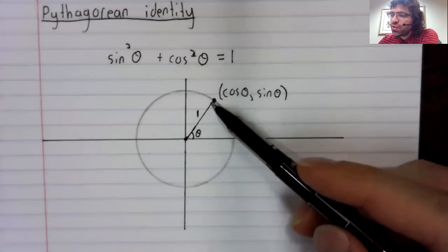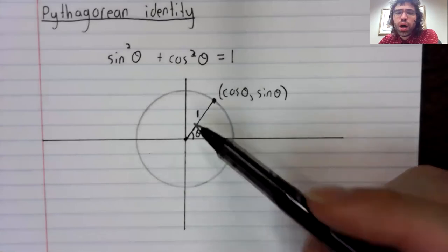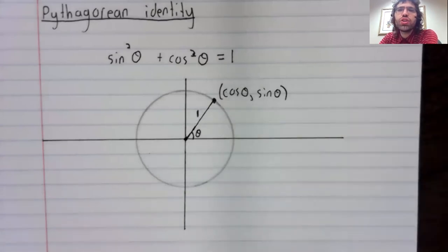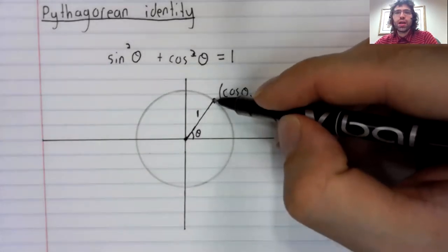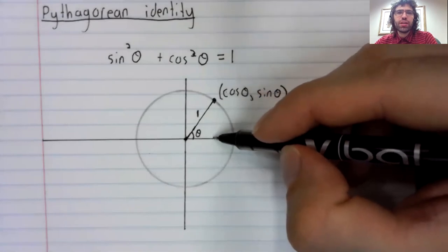This line segment here has a length of one because it's the unit circle. And if you draw a line segment down from here,